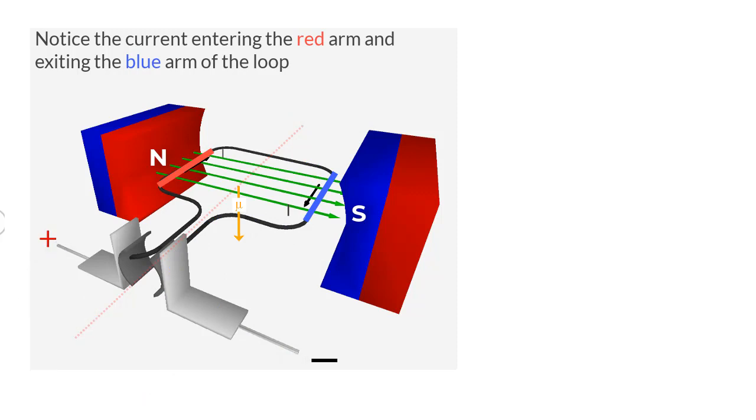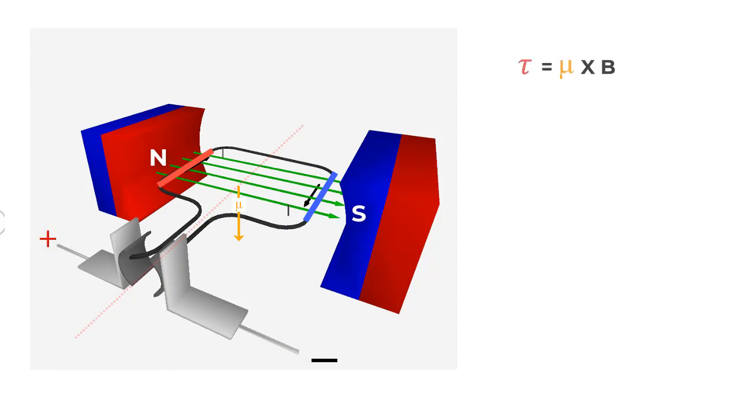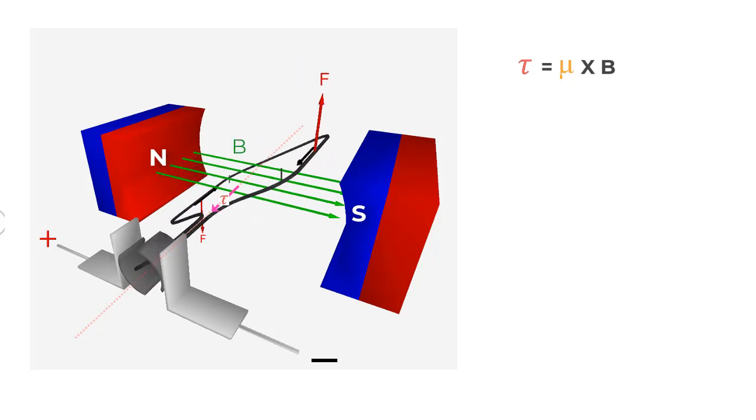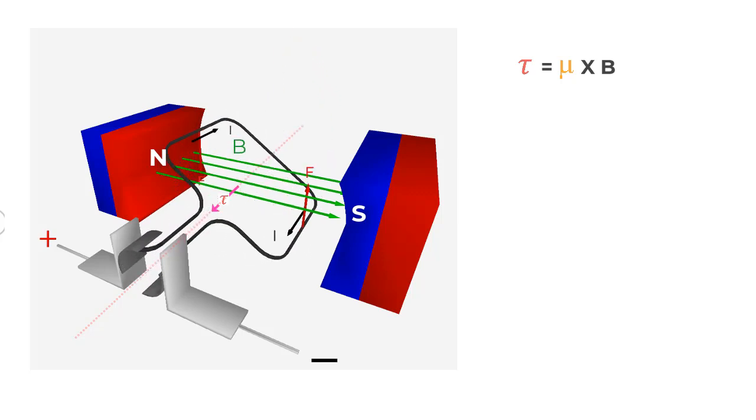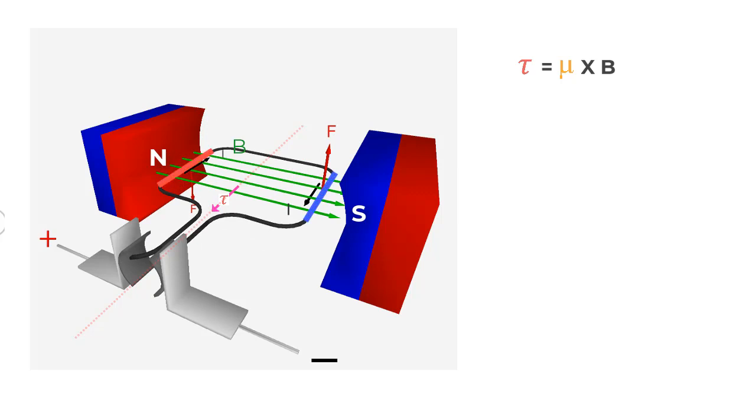Since the rotor lies between the poles of the permanent magnet, the magnetic field creates a torque equal to mu cross B that makes the rotor spin. For the position the rotor is in the diagram right now, the torque will make it spin in anticlockwise direction.